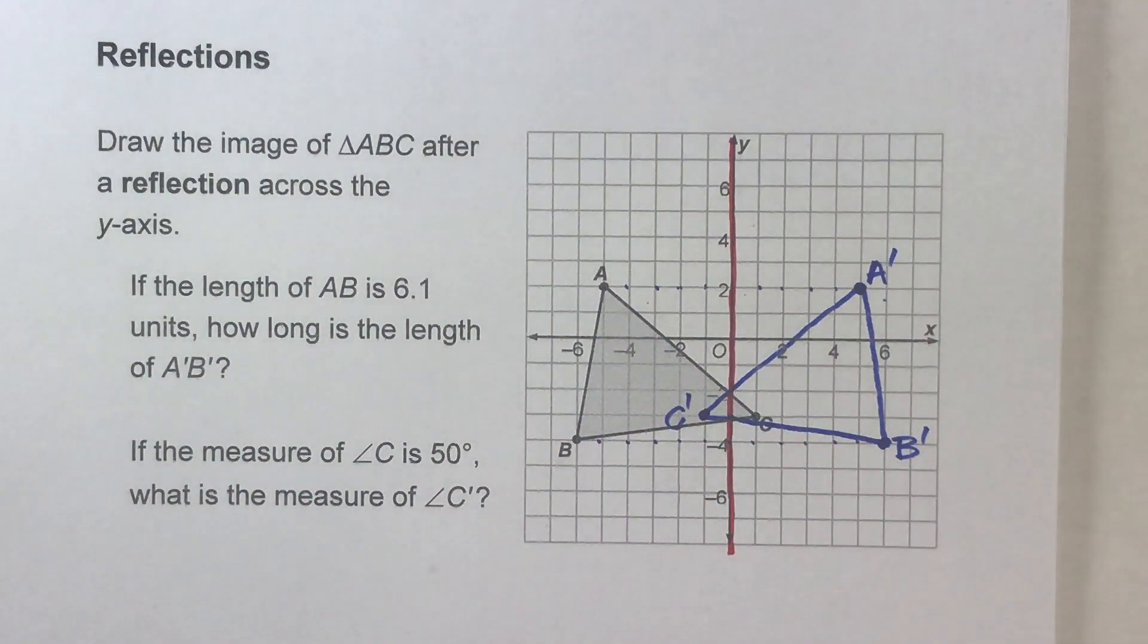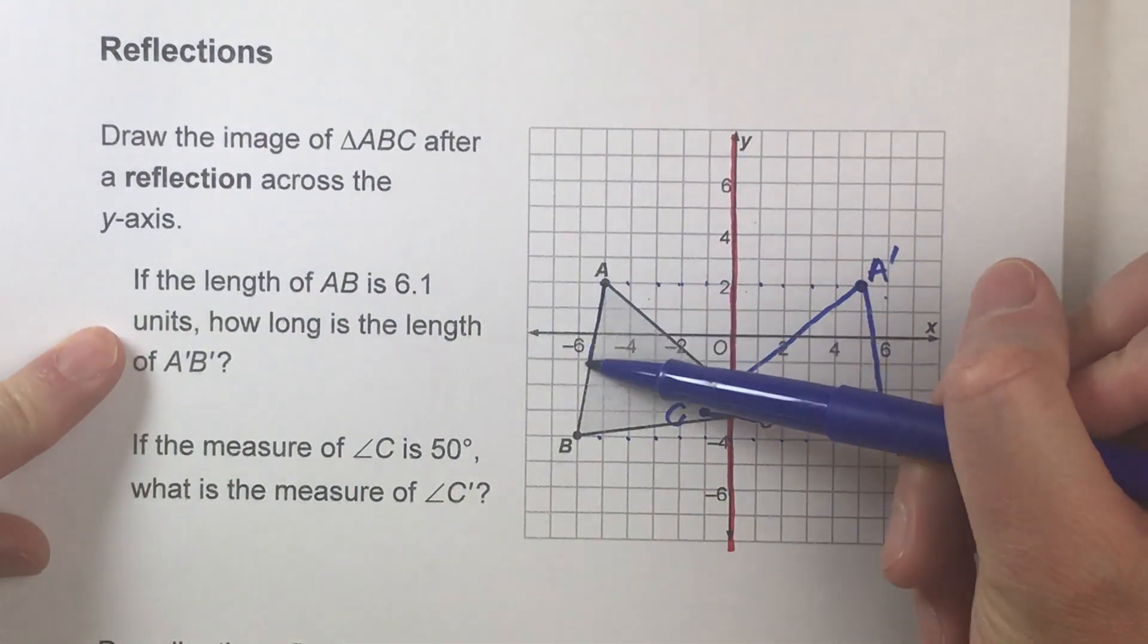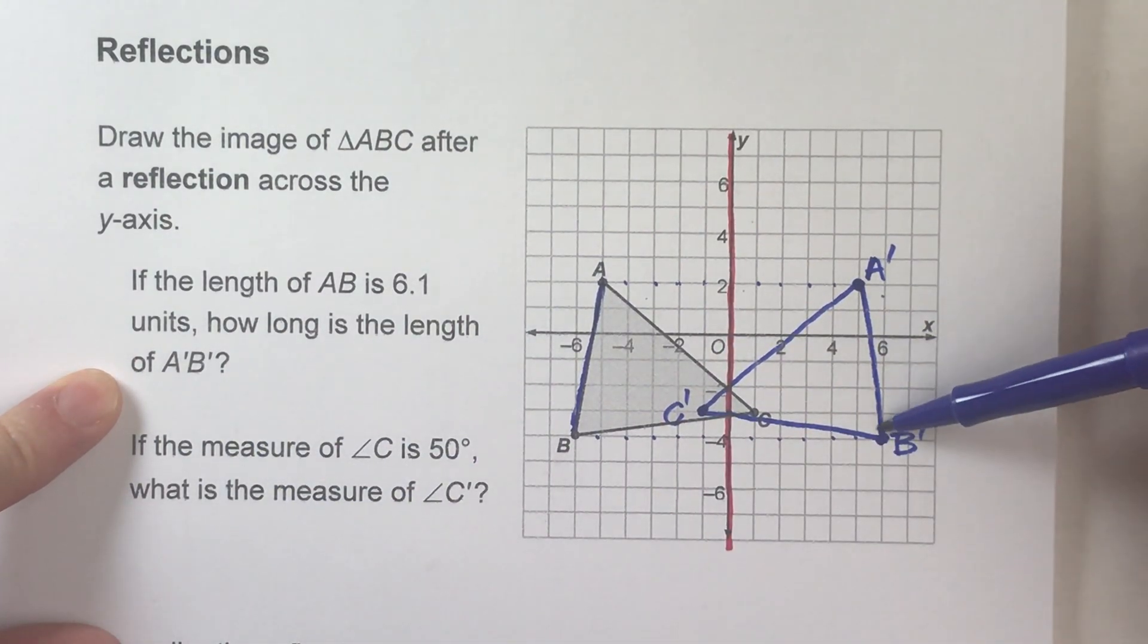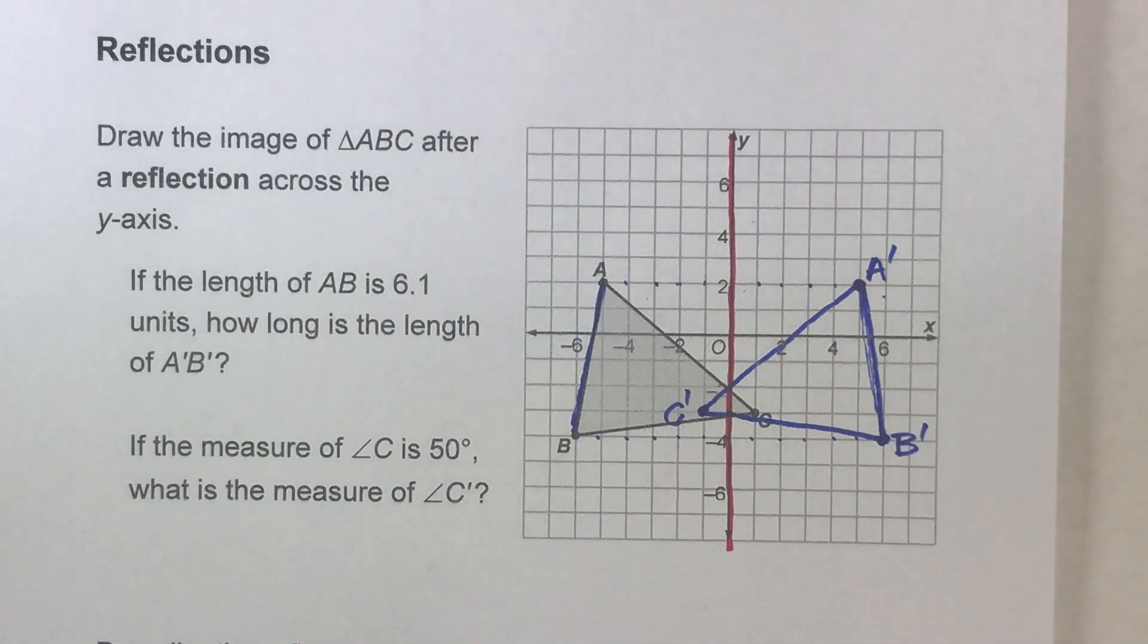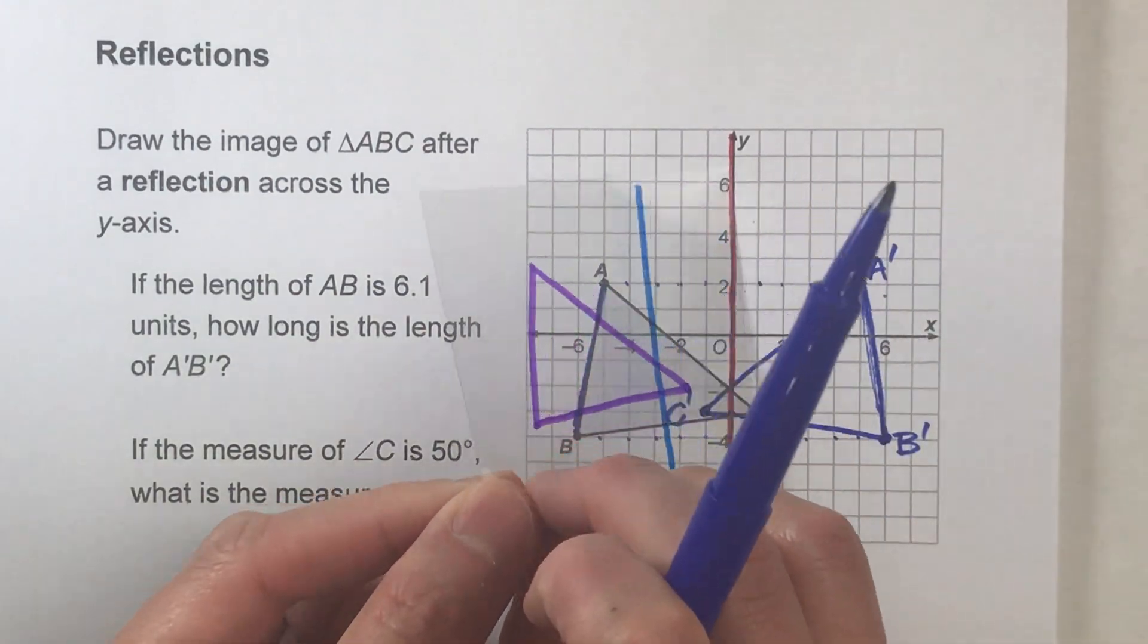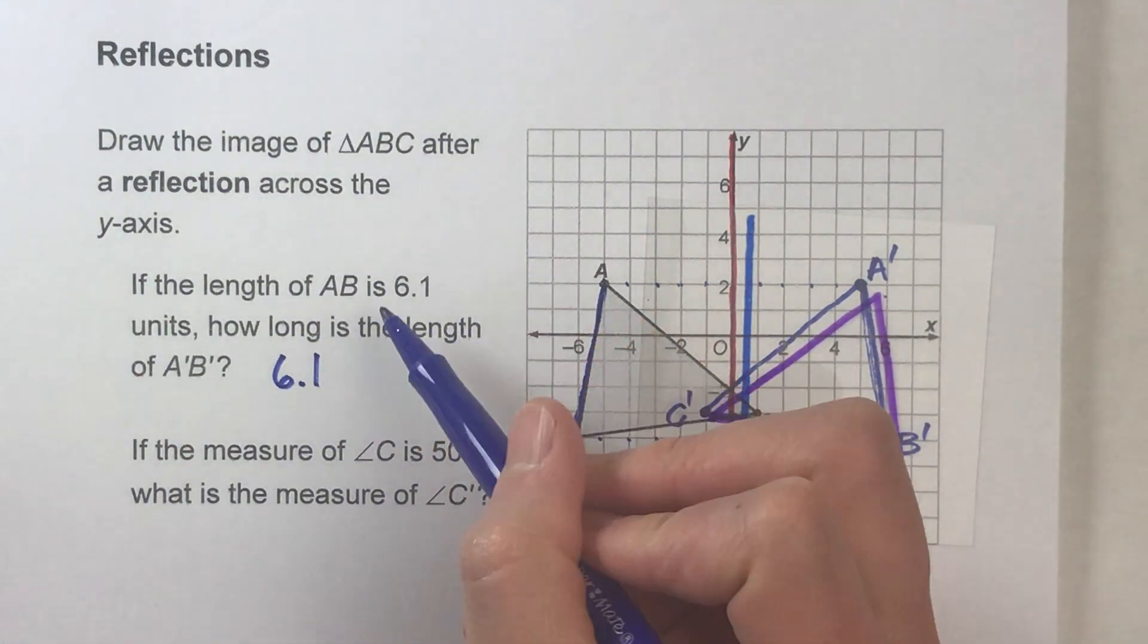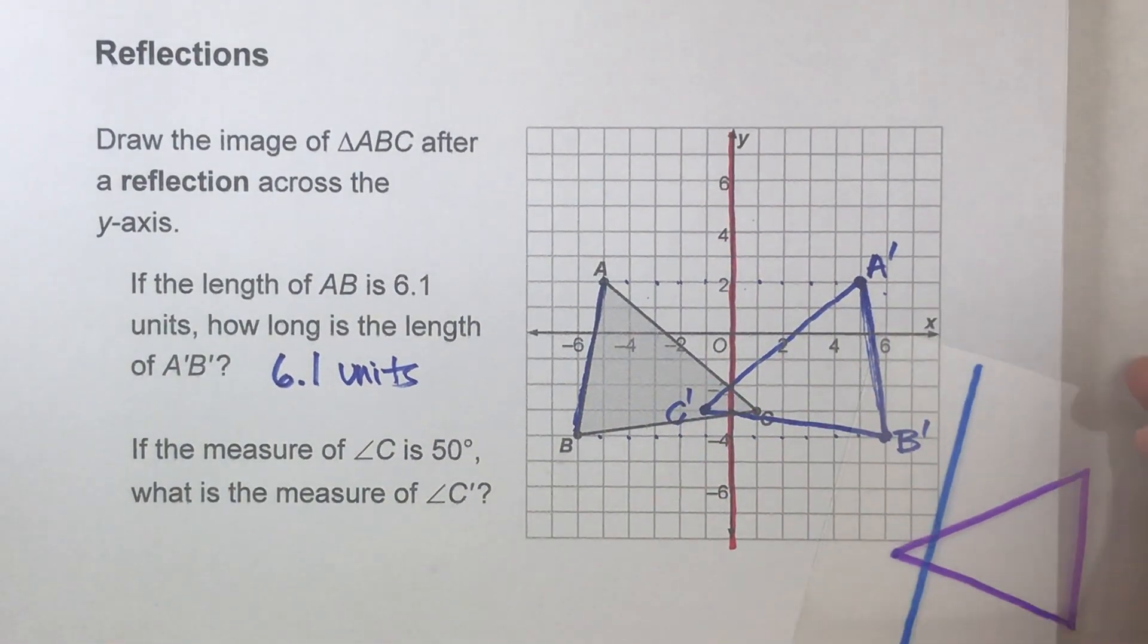So that's going to help us answer this next set of questions. If the length of segment AB, that's this length, is about 6.1 units, how long is the length of A prime B prime? So that'd be this length. Notice, these two should be the same, because again, the triangles are congruent. So this side right here is the same length as this side right here. So if AB is 6.1, A prime B prime should also be 6.1 units.